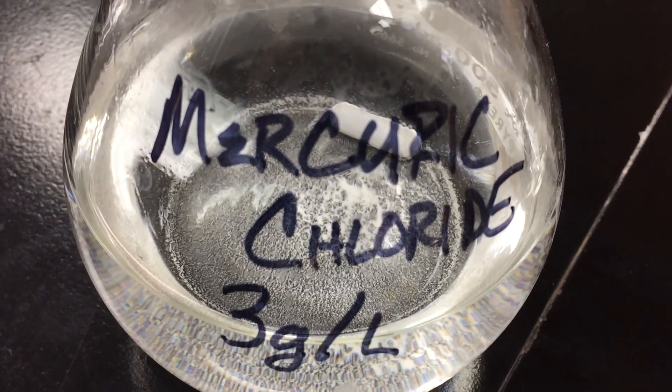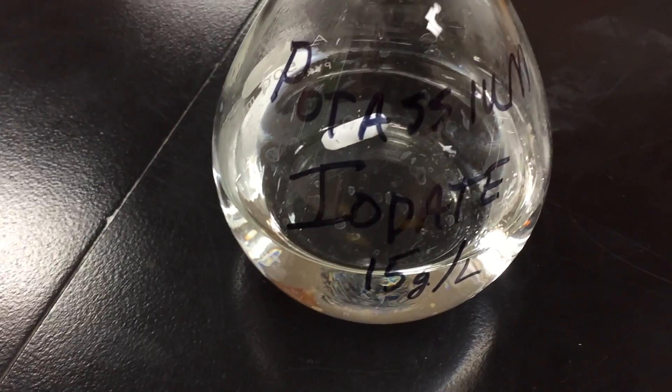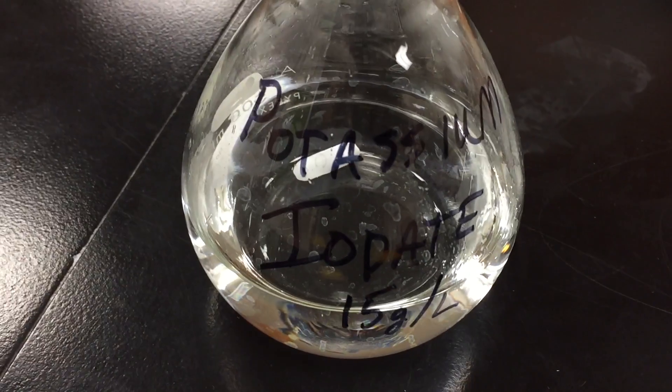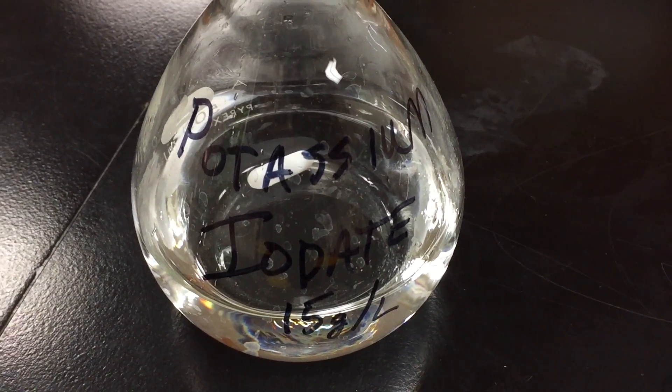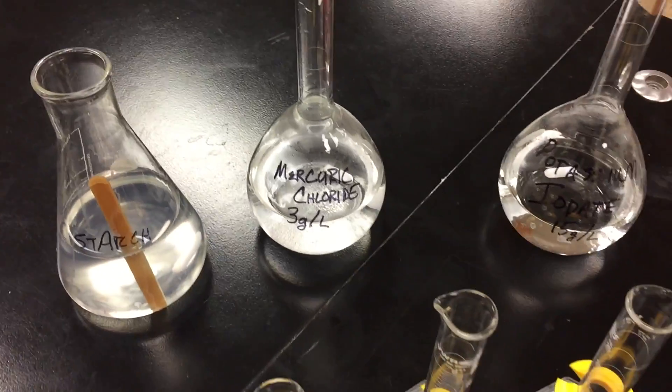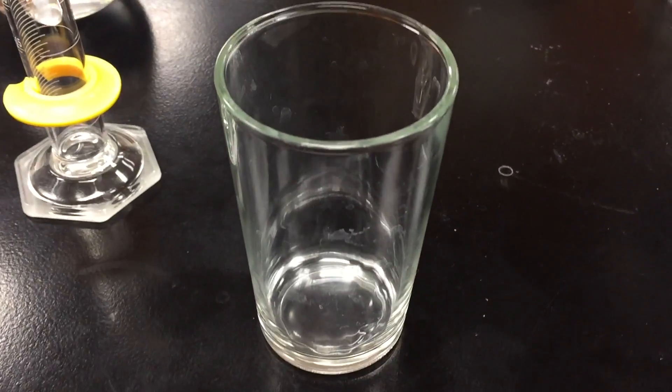And then finally we've got some potassium iodate. The potassium iodate worked out to be about 15 grams per liter. I put about seven and a half grams into a 500 milliliter flask and diluted it with water. All three of these solutions diluted with water. And then I've got some graduated cylinders here just to measure some stuff, and finally our wonderful little glass.